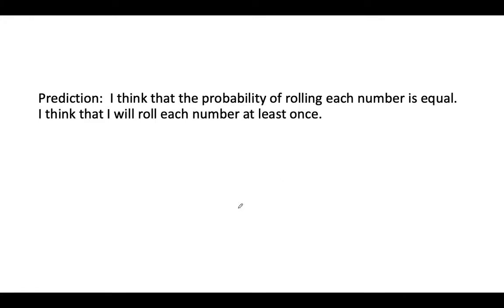So before I do my experiment, I'm going to make my prediction. I'm going to predict what I think is going to happen. So from what I know about probability, I know that a die has six numbers, and I think that the probability of rolling each number is equal. I think there is an equal chance that I will roll each number. I don't think I'm going to get all sixes, I don't think I'm going to get all twos, I think I'm going to get kind of an equal number. And I also added that I think I will roll each number at least once. So I think because the probability of rolling each number is the same, is equal, I think that I will get each number at least one time. So I'm going to do the experiment and see what happens.